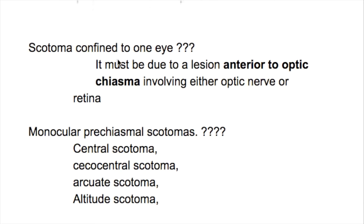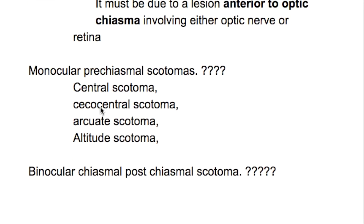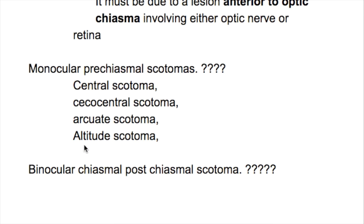Scotomas confined to one eye must be due to a lesion anterior to the optic chiasma, involving either the optic nerve or retina. The monocular pre-chiasmal scotomas are central, secocentral, arcuate, and altitudinal scotomas.